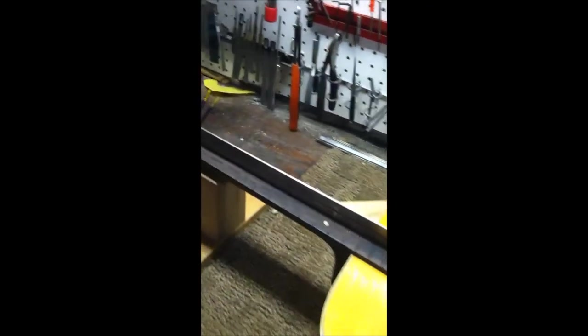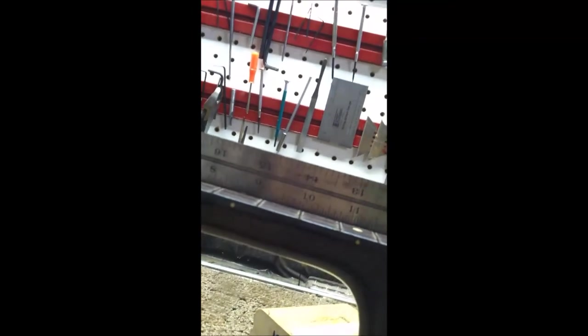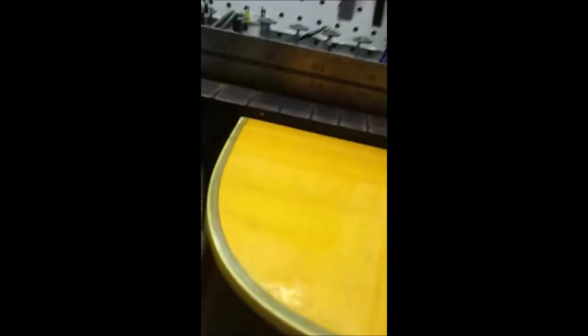So here we are, clamps are off, straight edges on. Let's get a look and see how well we did. Hopefully you can see what I see, and that is no space under the straight edge at any point. Stayed perfectly dead flat. There's the tongue and how nicely that came out. Put a little light on there so you can see.